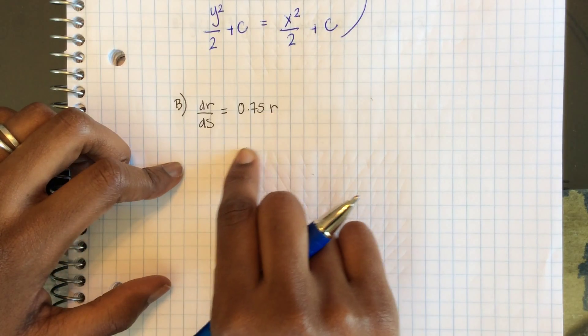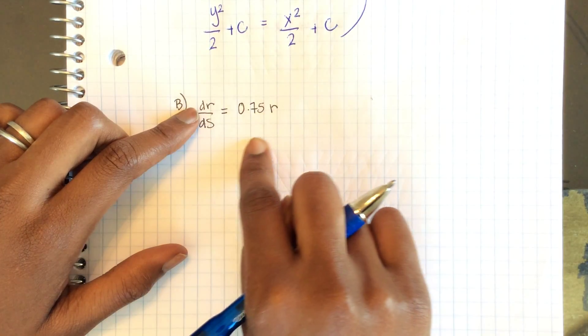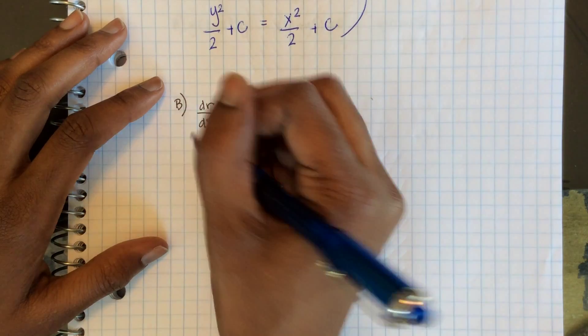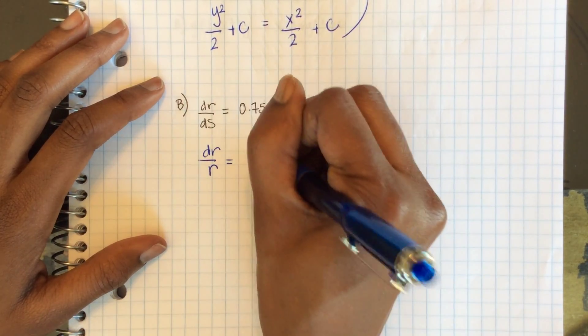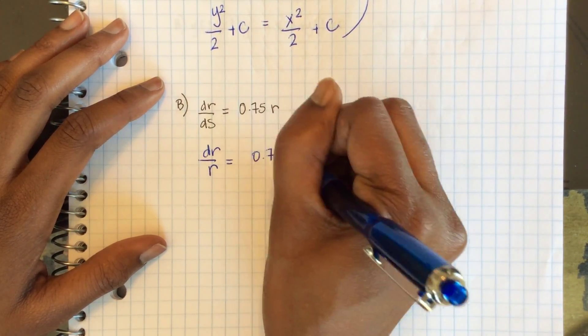So I will divide r to this side and I will multiply ds to this side. So I have dr over r equals 0.75 ds. Now that I've separated my variables, I can integrate both sides.